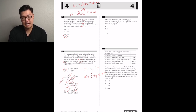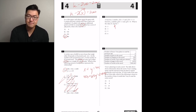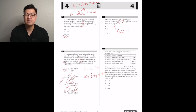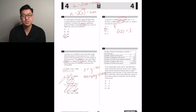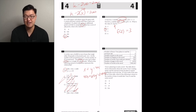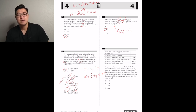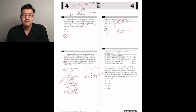A function f satisfies f(2) = 3 and f(3) = 5. A function g satisfies g(3) = 2 and g(5) = 6. What's the value of f(g(3))? Do it inside out: g(3) is 2, then f(2) is 3. The answer is B.